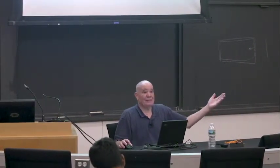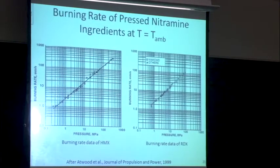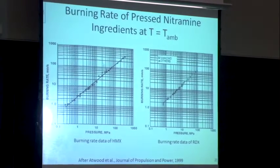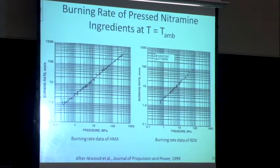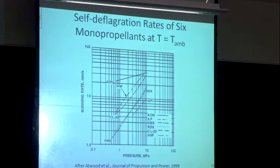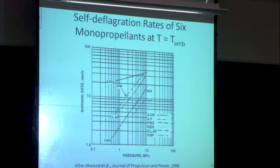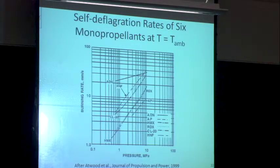If I look at the burning rate of HMX or RDX as a function of pressure, they pretty much follow St. Robert's Law and I can get a P^N value that's reasonably accurate. Comparing several monopropellants — ammonium dinitrimine, hydrazinium nitroformate, CL20, RDX, ammonium perchlorate, HMX — they all have different pressure exponents, indicating different chemistry and different physical processes changing their pressure dependence.